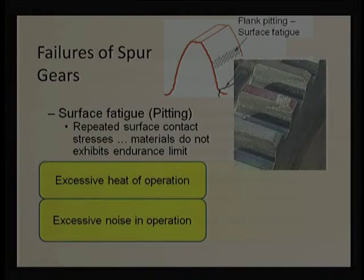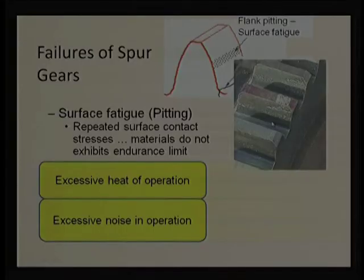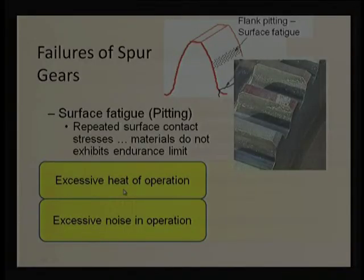Two major problems related to pit generation are excessive heat of operation and noise. Pits can act as lubricant reservoirs and may dissipate heat, but whenever there is a pit, rolling motion reduces and sliding increases — the slide-to-roll ratio increases. Higher slide-to-roll ratio increases frictional heat generation, which creates excessive heat. With pits, there is no continuous contact, leading to noise generation.